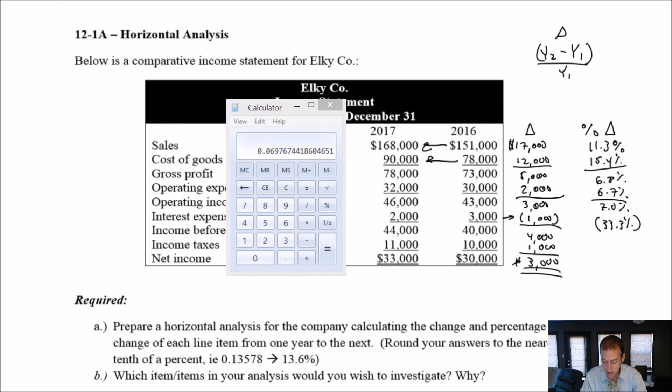Income before taxes, change of four grand, and the base there is 40. So it's 10%. Four divided by 40 is 10%. Income taxes is again 10%. One divided by 10. And three divided by 30, our net income is 10%. So oddly enough, you might think this wouldn't be the one, but the one that's jumping out at me to investigate here would be cost of goods sold.